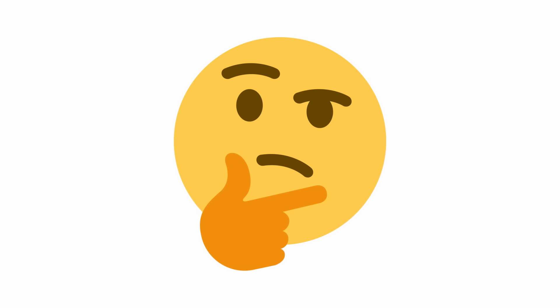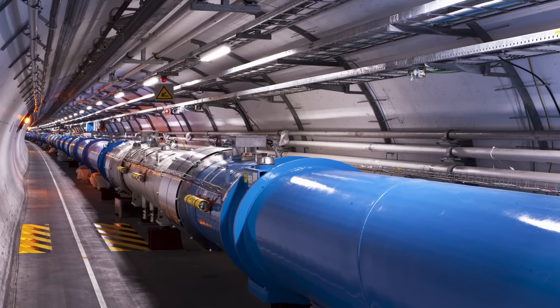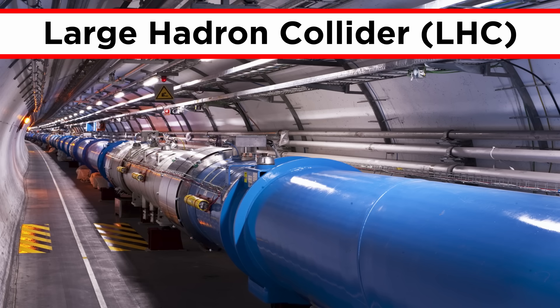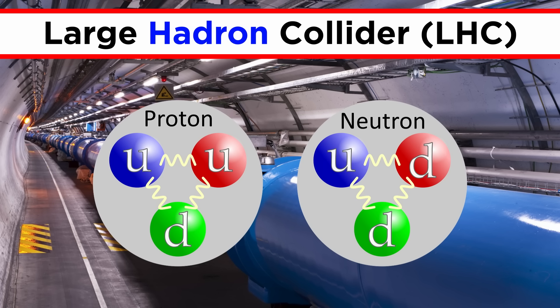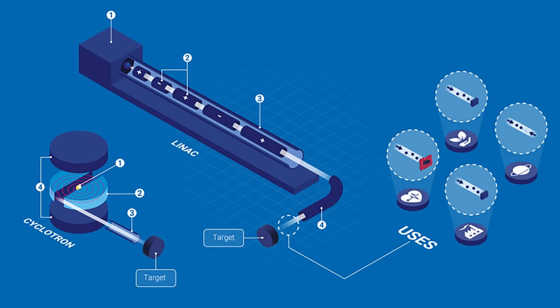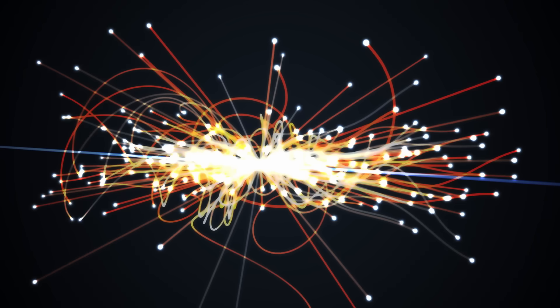But how do scientists study objects that are so small that they can't be seen even with the world's best microscope? The answer is simple. Particle accelerators, particle colliders, and a variety of ingenious detector technologies. Similar to the Large Hadron Collider at CERN that smashes hadrons together, which once again are made up of three quarks apiece, there are particle accelerators around the world that excite and then direct beams of particles at each other so that they collide at extremely high energies and reveal fascinating physics.